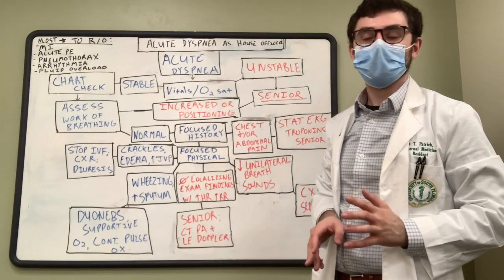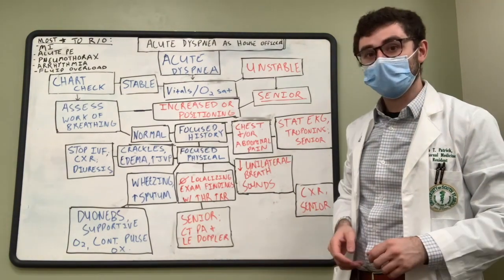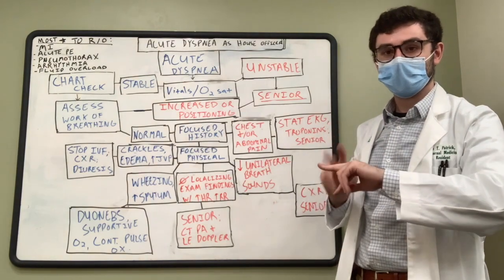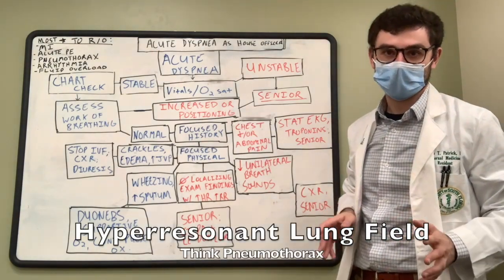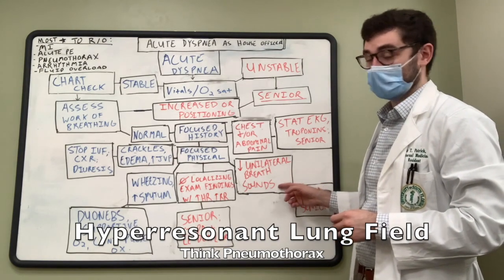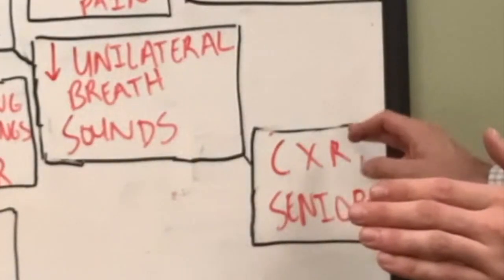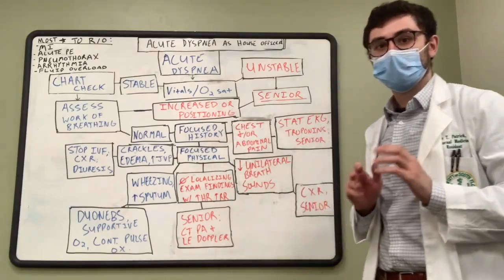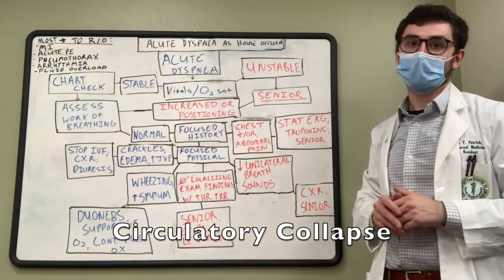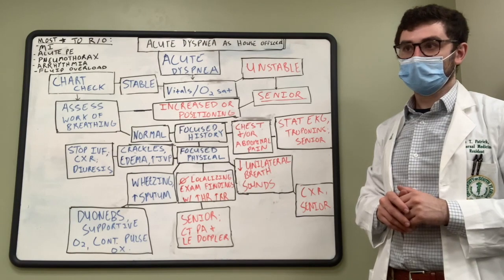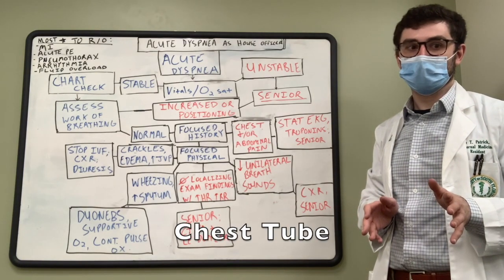If you're listening to the patient's back and notice on one side there are hardly any breath sounds, then assess with percussion. If that side sounds very suspiciously hyper-resonant, you should be thinking about a pneumothorax. The most important thing to do is order a STAT chest x-ray and alert your senior, because a pneumothorax can cause circulatory collapse if it evolves into a tension pneumothorax — and you'll need pulmonology or another team to place a chest tube to help the lung re-expand.